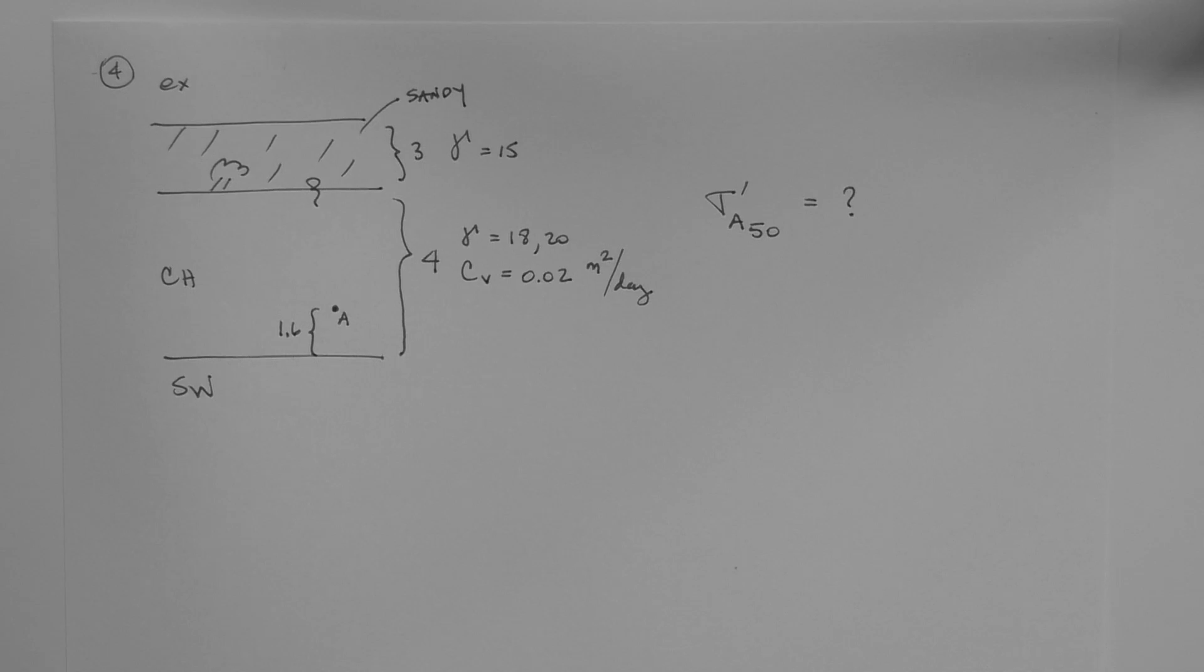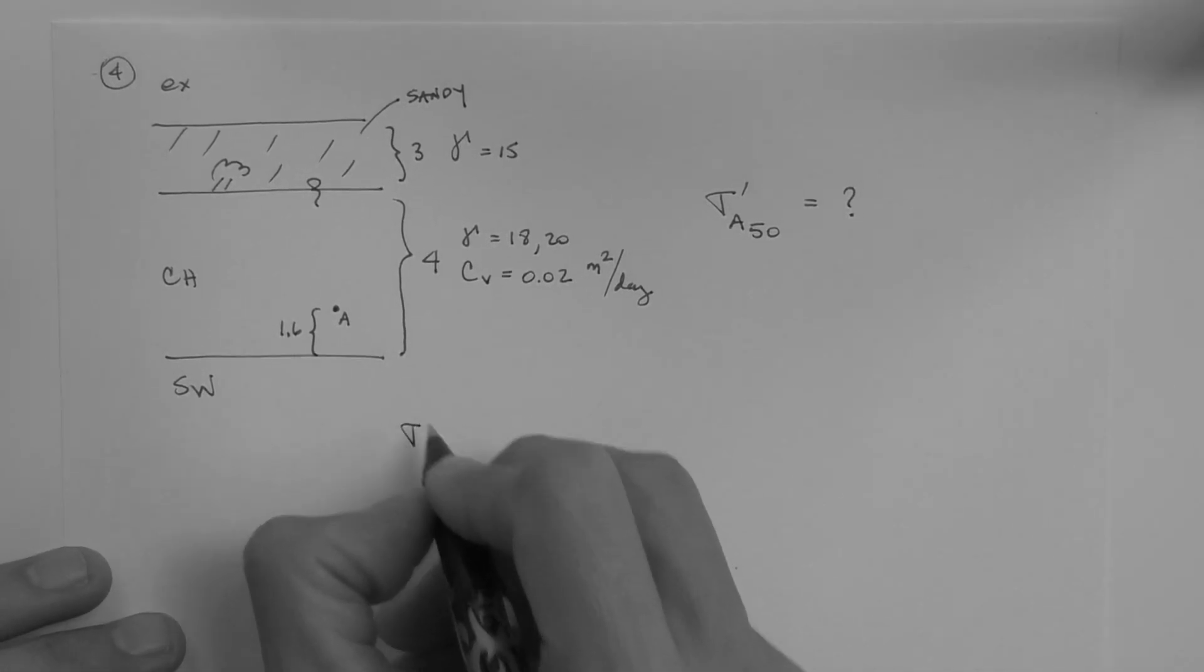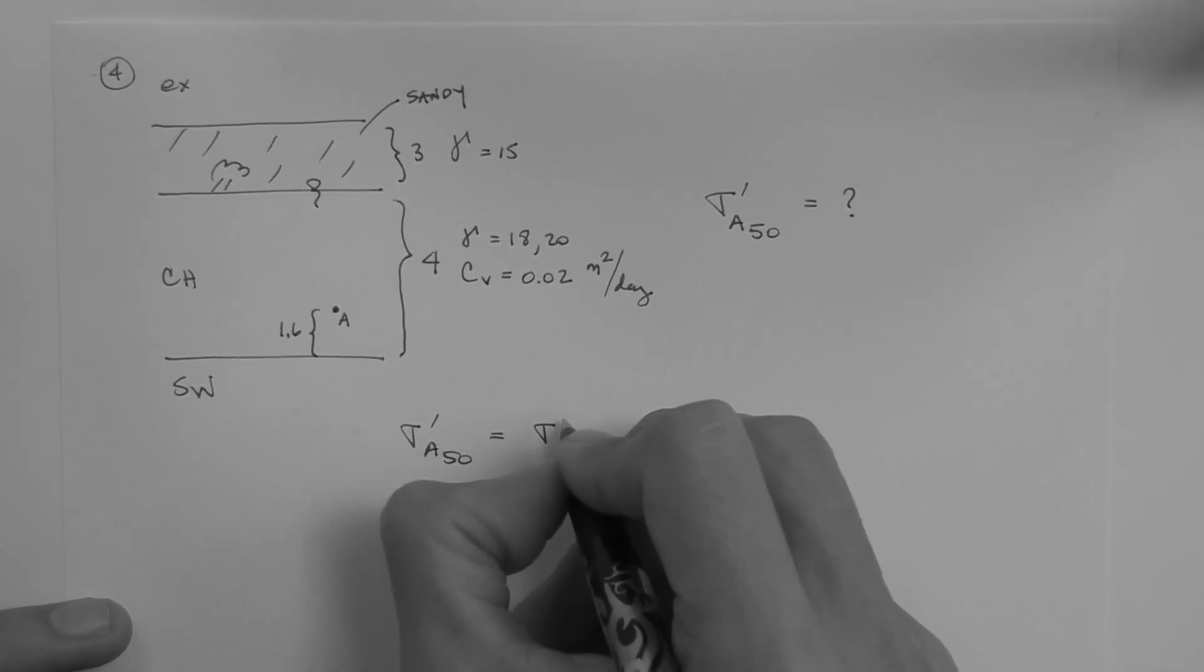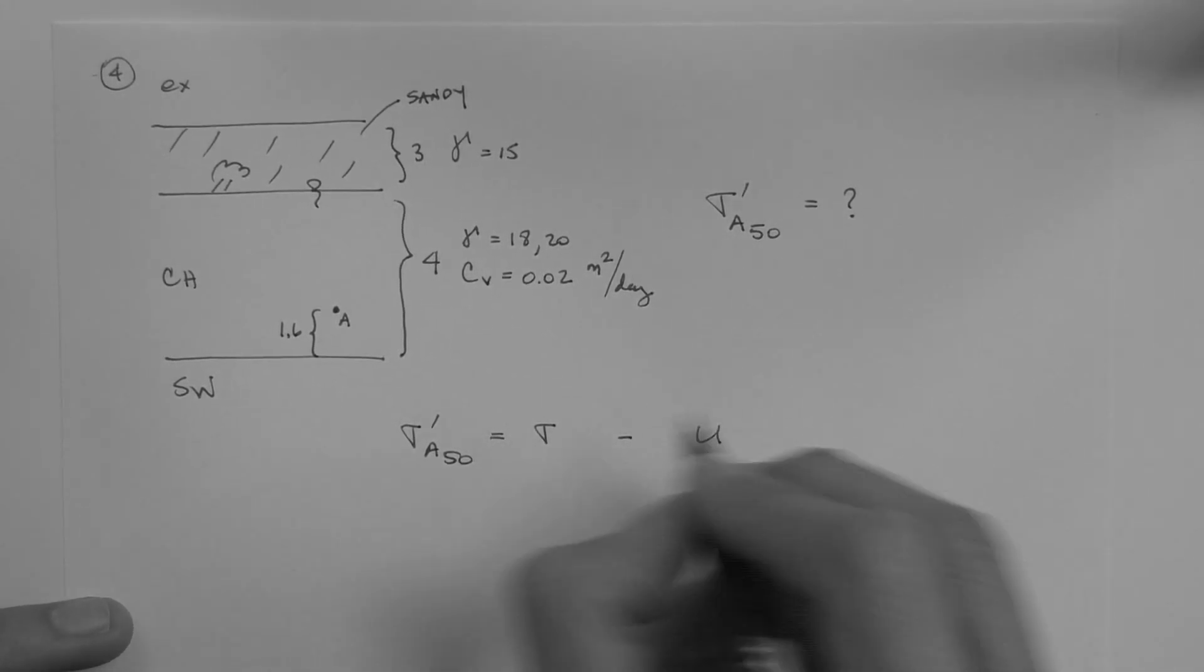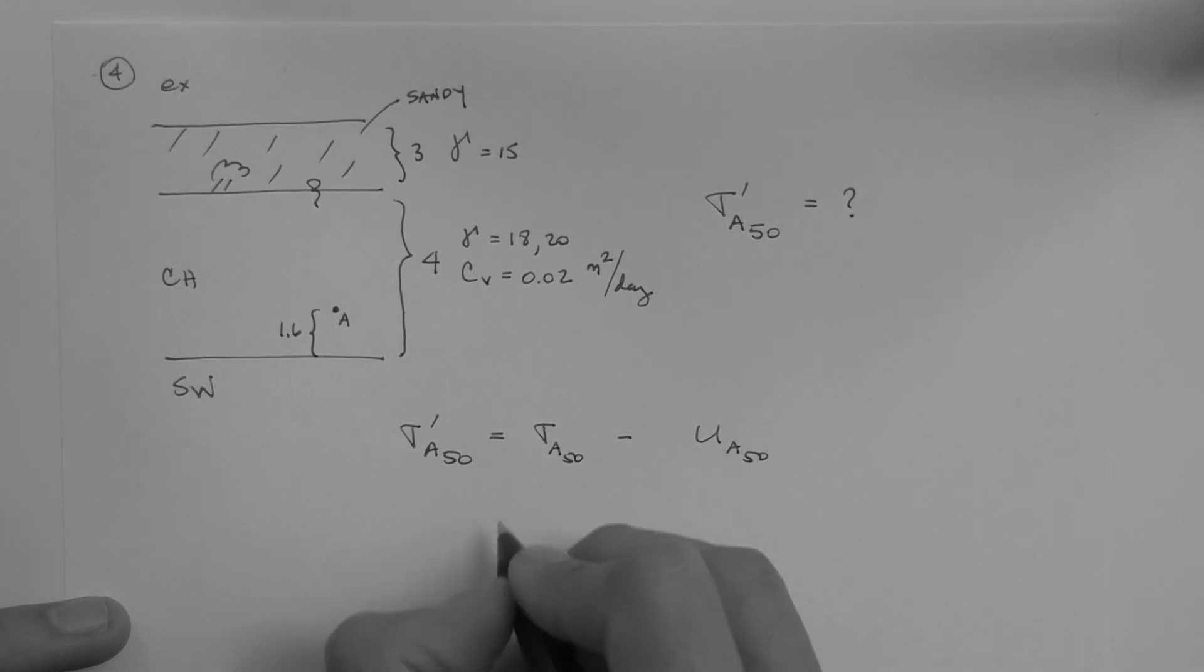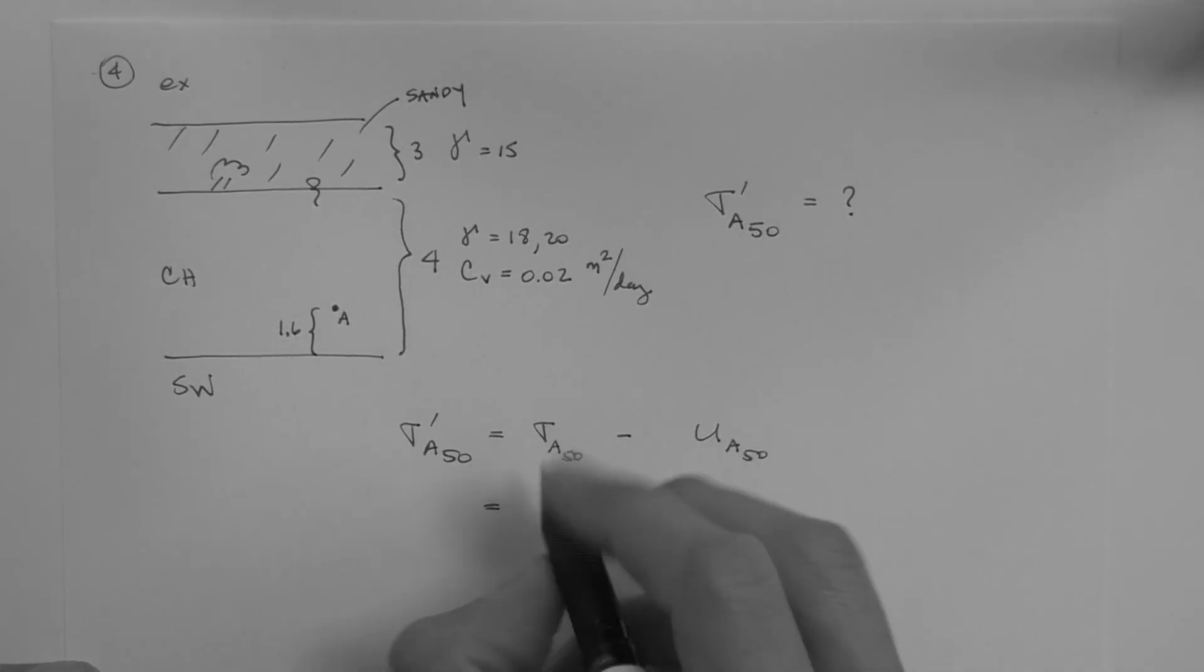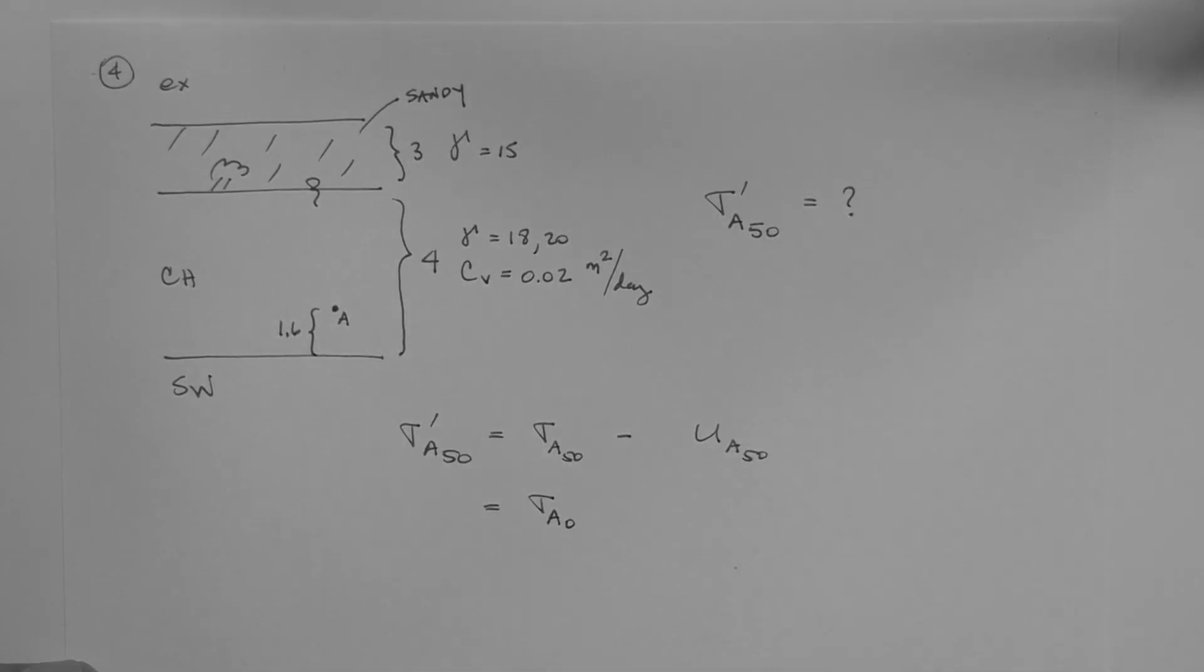To solve this problem we'd write out the equation for effective stress. Effective stress point A, 50, is equal to the total stress minus U, point A at 50. The total stress at point A at 50 is equal to the total stress at point A at time equals zero, that is before the fill is placed, plus the fill.